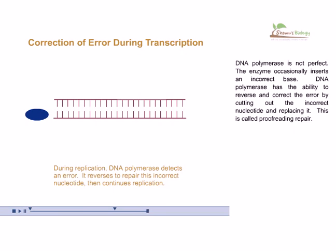During replication, we can see the DNA polymerase detects an error, it reverts to its repair phase, the incorrect nucleotide is deleted, and then a new nucleotide is added.